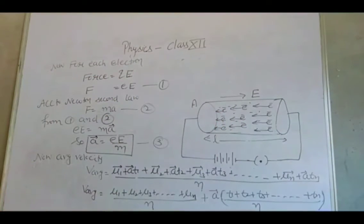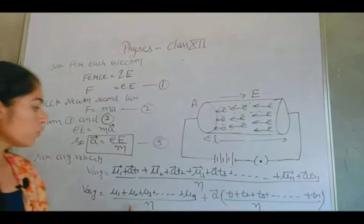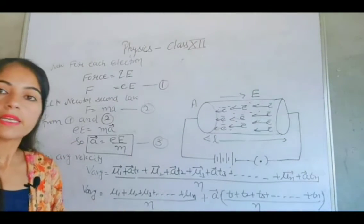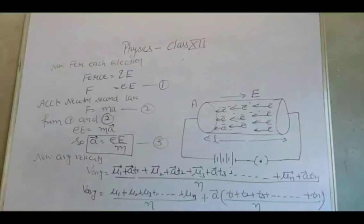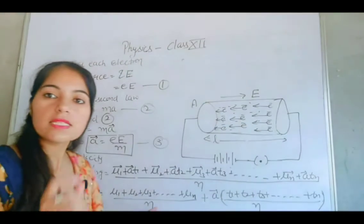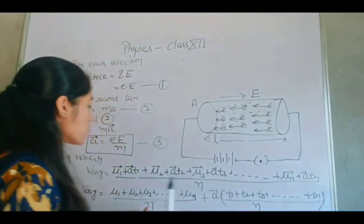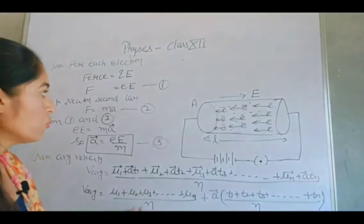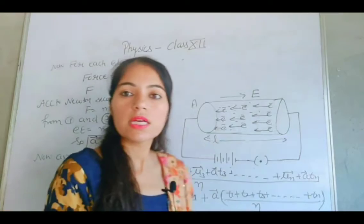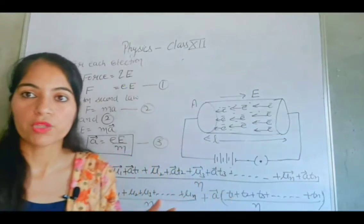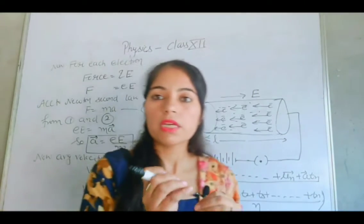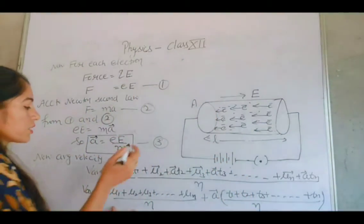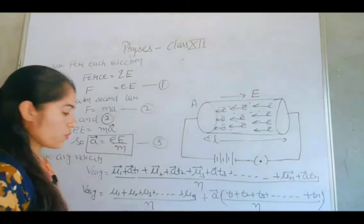The first part — (u1 plus u2 plus u3 ... plus un) divided by n — is the average initial velocity. And because initially electrons are in random motion, they cancel each other's effects. So the average initial velocity equals zero, and V average simplifies to a into (t1 plus t2 ... plus tn) divided by n.